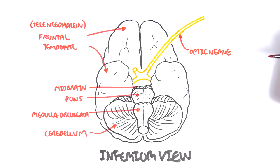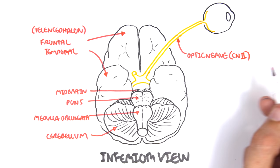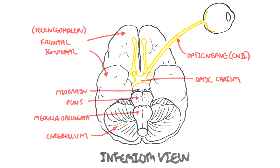Some other important structures visible from the inferior view are your optic nerves, which are cranial nerve number two. These branch at the optic chiasm. Under these structures you can find the olfactory nerve, which is cranial nerve number one — your smelling nerve. It is a sensory nerve.